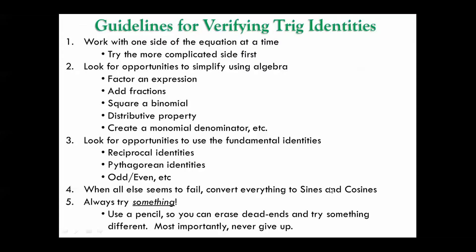Number four, when all else seems to fail, turn all of your trig functions to sines and cosines. Take tangent and make it sine over cosine, cotangent make it cosine over sine, secant make it one over cosine, cosecant make it one over sine. You don't want to do that first, that's why I put it down on number four, but you definitely want to try that if you're kind of stuck.